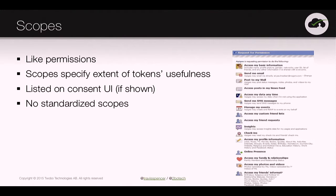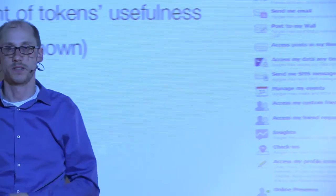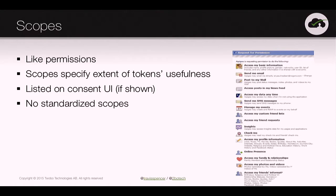OAuth defines something called scopes — think of scopes like permissions or rights that you are delegating or authorizing some third party to do on your behalf. They are often presented to the user in some sort of consent screen. There are no standard scopes in OAuth; it just says it's a space-separated list, so you can create very simple or very complex things.